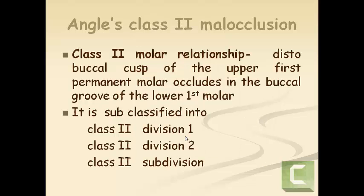Now coming to Angle's class 2 malocclusion. According to Dr. Angle, in class 2 malocclusion the lower molars are distally positioned relative to the upper molars. The molar relationship in a class 2 malocclusion is such that the distobuccal cusp of the upper first permanent molar occludes in the buccal groove of the lower first molar.